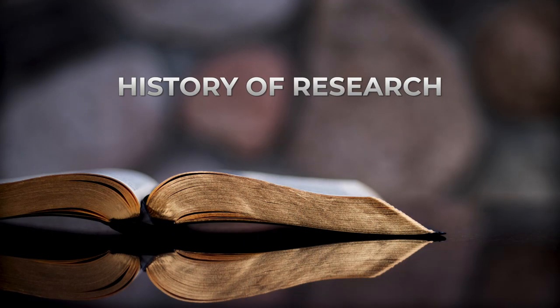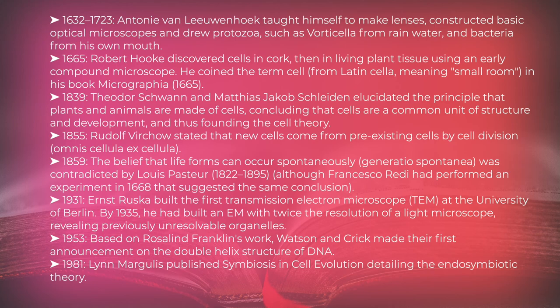1632 to 1723, Antony van Leeuwenhoek taught himself to make lenses, constructed basic optical microscopes and drew protozoa, such as vorticella from rainwater and bacteria from his own mouth. 1665, Robert Hooke discovered cells in cork, then in living plant tissue using an early compound microscope. He coined the term cell, from Latin cella, meaning small room, in his book Micrographia, 1665.